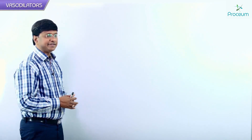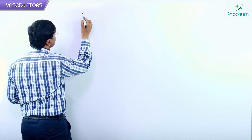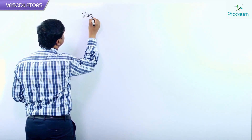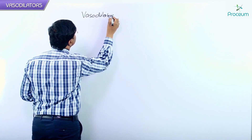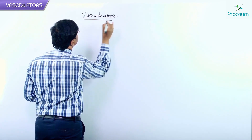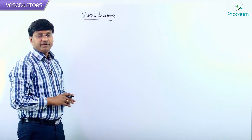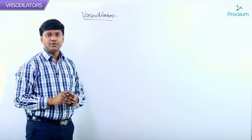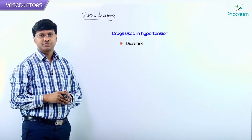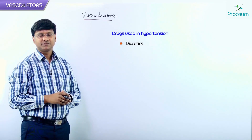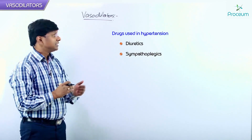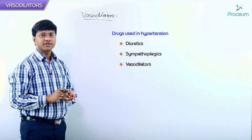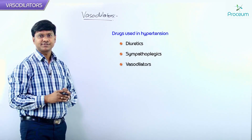Let me discuss another group of antihypertensives — vasodilators. We have discussed until now diuretics, which are used in hypertension, and the second group, sympathoplegics. This is the third group of drugs: vasodilators.